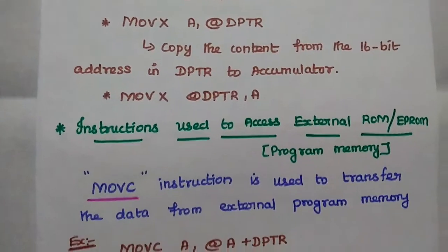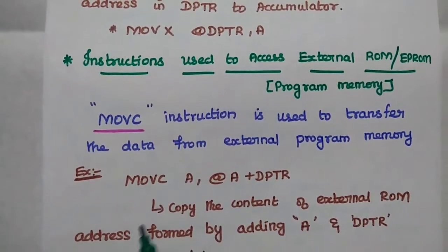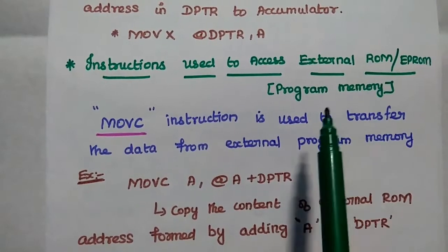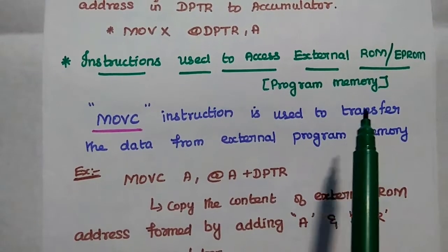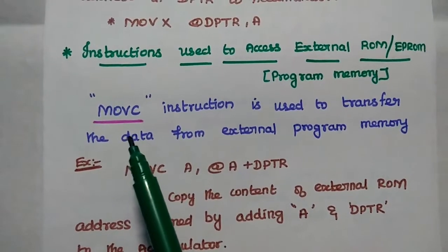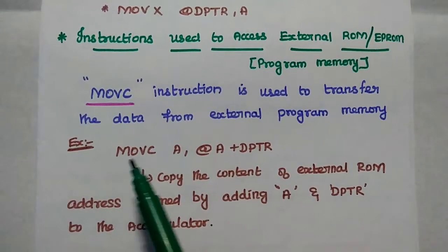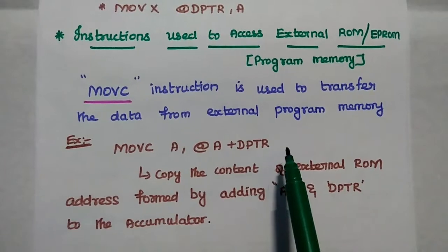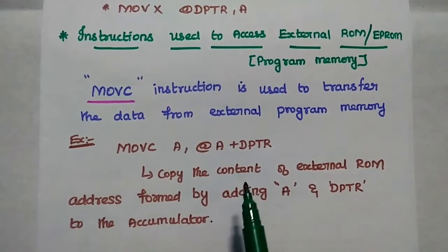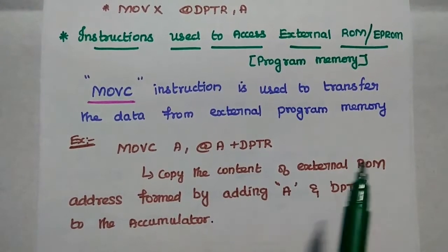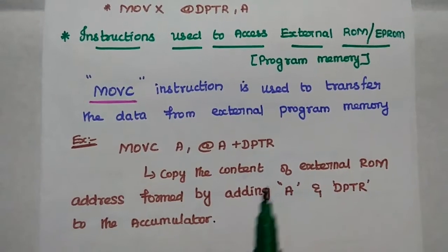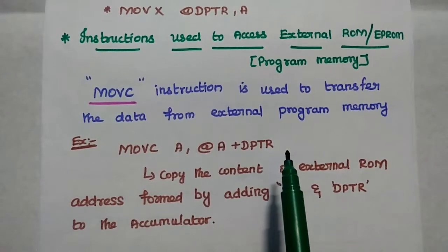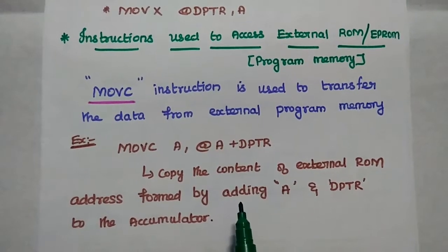The next instructions are used to access external ROM or EPROM, that is read-only memory representing program memory. For that we use the MOVC instruction. The example is MOVC A, @A+DPTR. This instruction is used to copy the content of external read-only memory at the address formed by adding the accumulator content and the DPTR value into this accumulator.